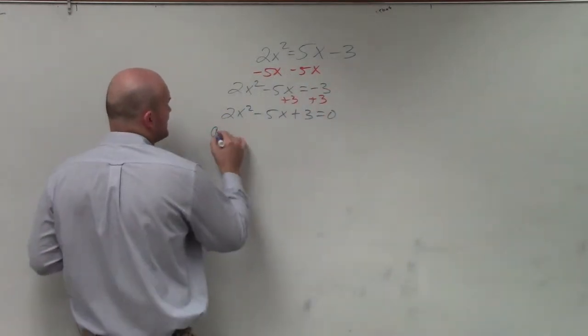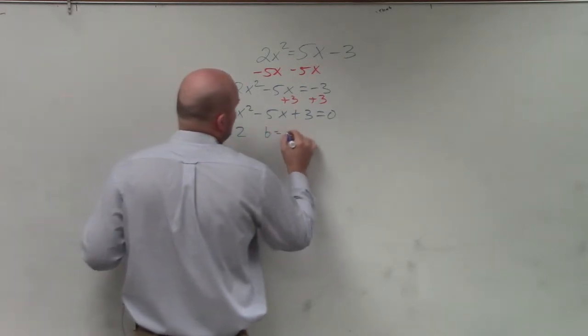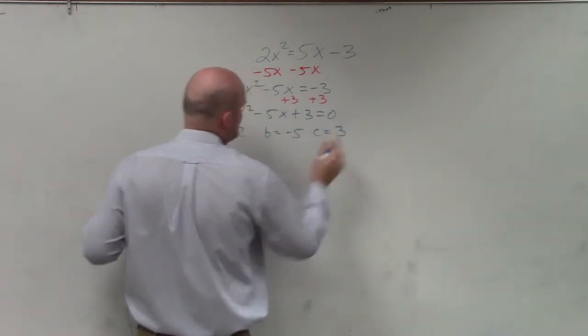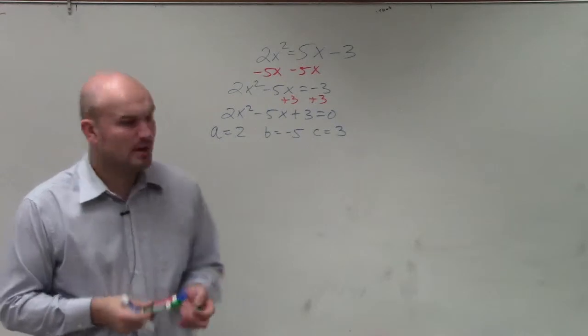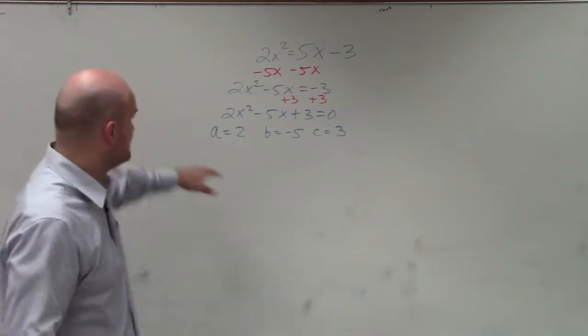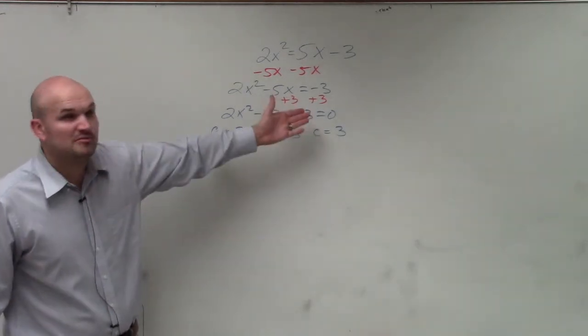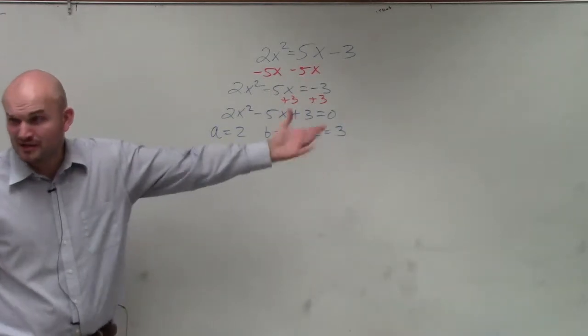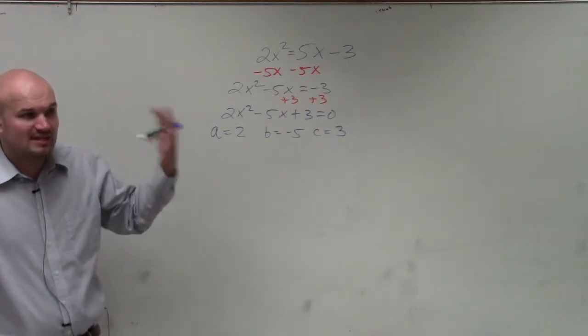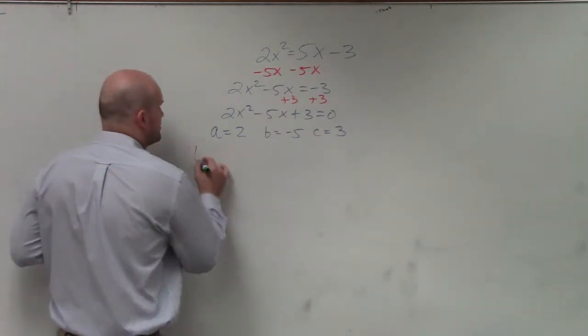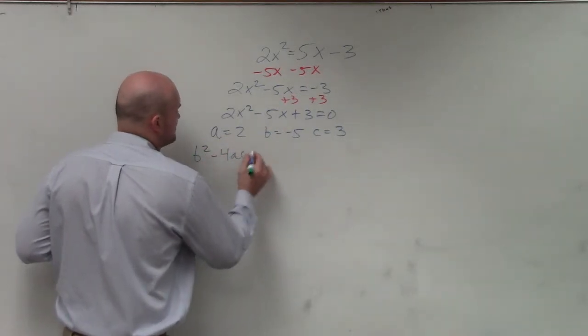Then the next thing is we want to determine our a, b, and c. a equals 2, b equals negative 5, c equals 3. Then we want to learn a little bit more about the discriminant, because we could see if this could be factorable. But if I'm going to use quadratic form, I at least want to know what type of problem I'm going to have. So I do b squared minus 4 times a times c.